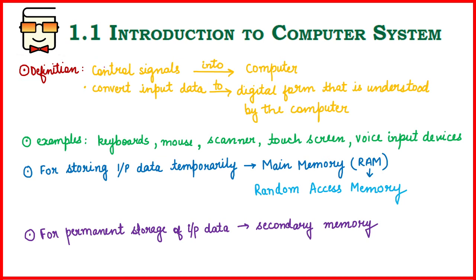When explaining input devices, first provide the definition: an input device is any device that sends control signals to the computer and converts input data into a digital form that can be understood by the computer. Second, quote examples such as keyboard, mouse, scanner, and others. Third, any input transferred through an input device is stored temporarily in main memory, also known as Random Access Memory or RAM. Finally, if input data needs to be stored permanently, it can be stored in secondary memory.